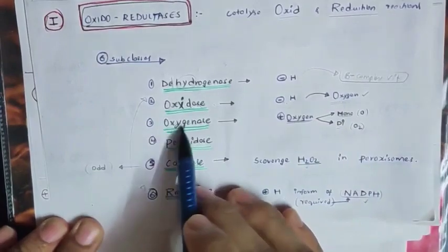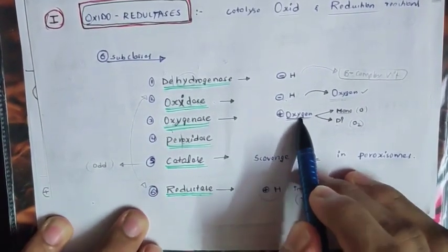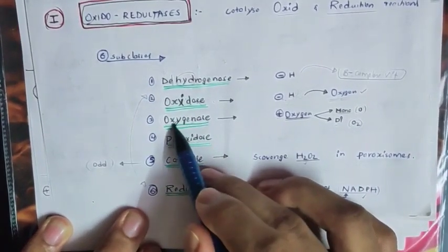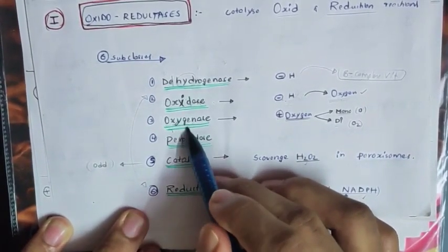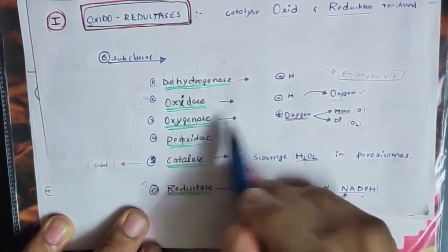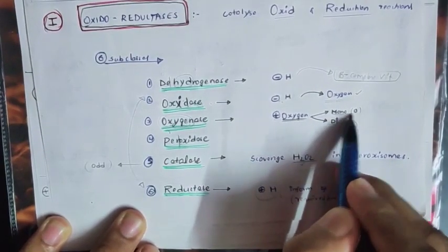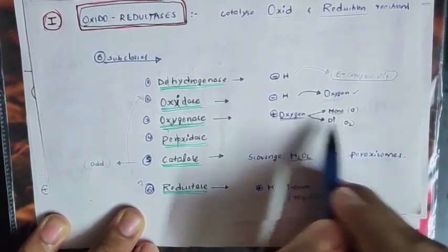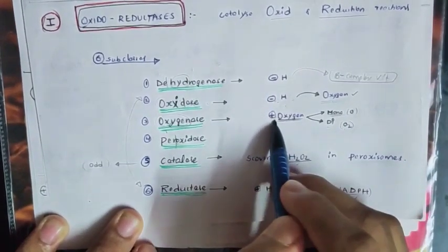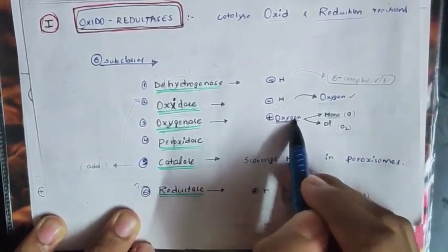What is the difference between Oxidase and Oxygenase? Both look similar. The difference is: Oxygenase adds an oxygen molecule to the substrate — it may be a mono (single) or di (double) oxygen atom. Oxidase involves removal of hydrogen or electron, not adding of oxygen. Adding of oxygen is called Oxygenase.